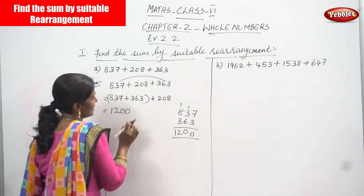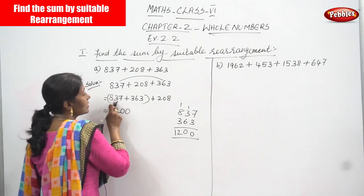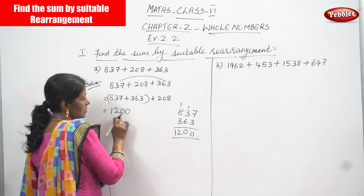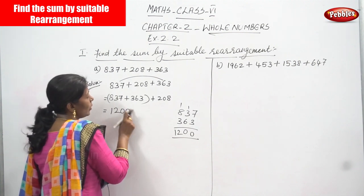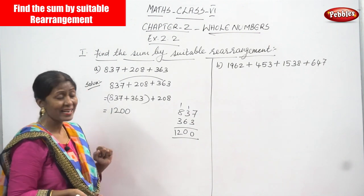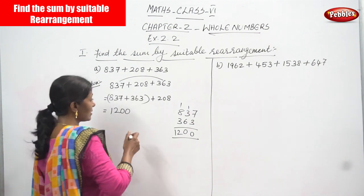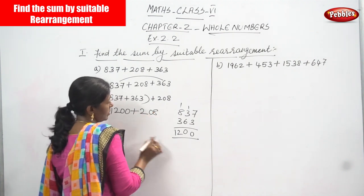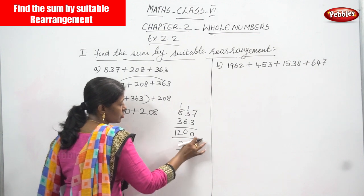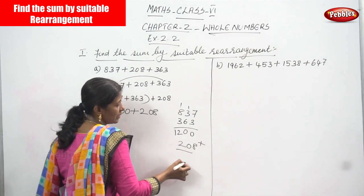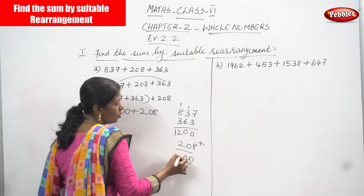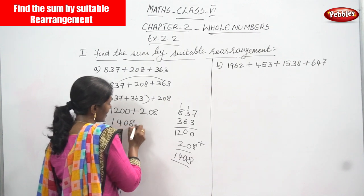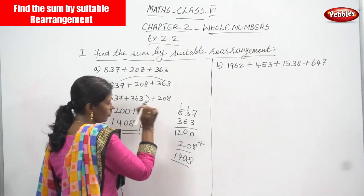I rearranged the numbers because it is very easy to add — the last two digits end with 0. Now adding the middle number: 1200 plus 208. 0 plus 8 is 8, 0 plus 0 is 0, 2 plus 2 is 4, bring down the 1. The answer is 1408.